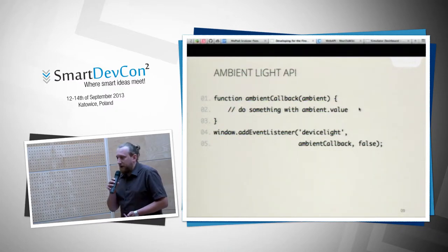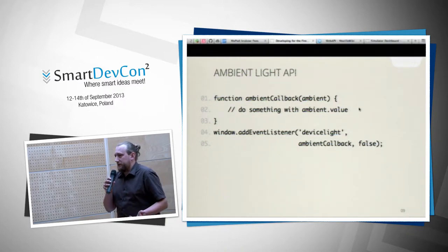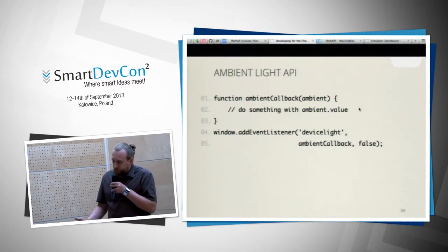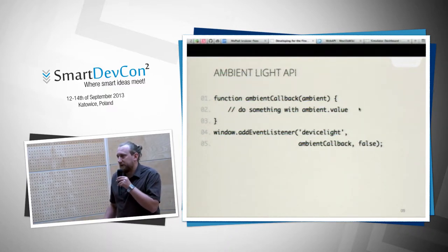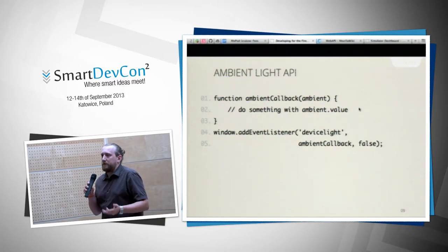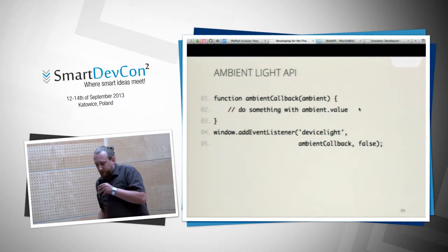One of the APIs is the ambient light API, and it's as simple as this — you can use it on a website and it will work, taking the ambient light sensor reading. You just add a listener to the device light event, and in the callback you get the ambient value and can do whatever you want with it — for example, changing the background color of the page, or switching a Kindle-style app to dark background and white text in low light.